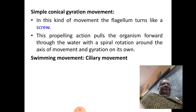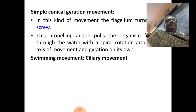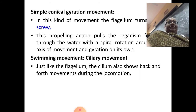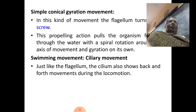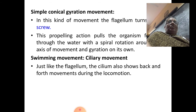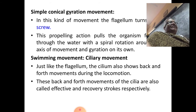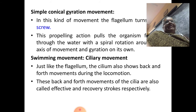Now we shall understand one more type of swimming movement, brought about by cilia, and this is known as ciliary movement. Just like the flagellum, the cilium also shows back and forth movements during locomotion. In my previous lecture I told you the differences between a flagellum and a cilium, but structure-wise they remain almost the same. These movements of the cilia are also called effective stroke and recovery stroke, similar to what you see in flagellar movement.